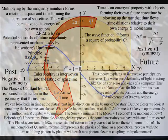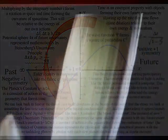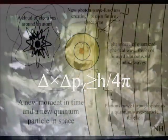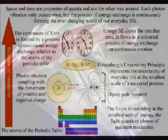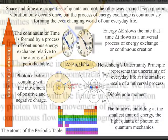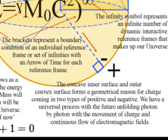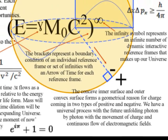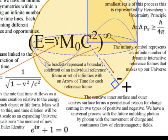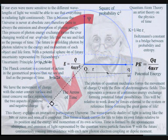This process is formed by the spontaneous absorption and emission of photon energy relative to the atoms of the periodic table. We have to square the radius of the sphere to get the surface area with the inner concave surface representing negative charge and the outer convex surface forming positive charge. This forms a two-dimensional boundary condition with the future unfolding photon by photon.